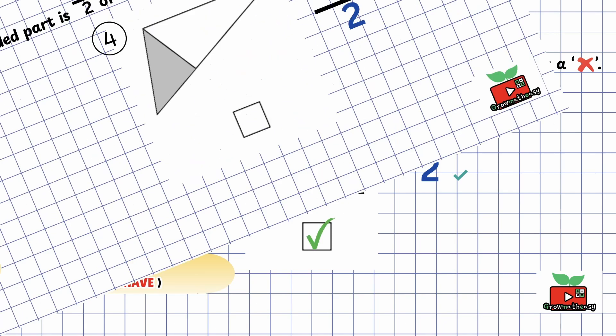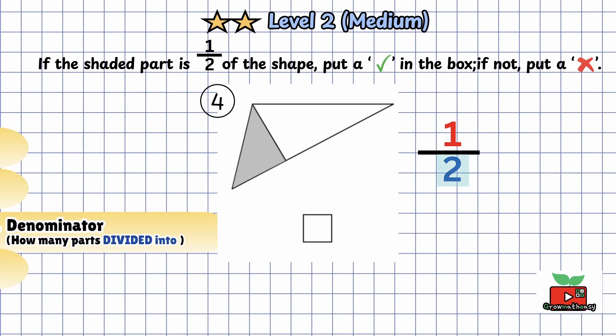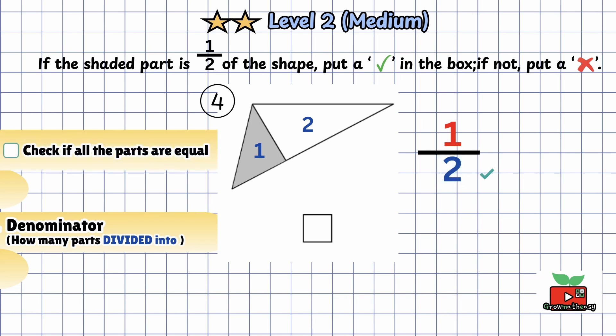Question 4: if the shaded part is half of the shape, put a tick in the box. If not, put a cross. Look at the denominator, which is 2. The shape is divided into two parts. Are all the parts equal? Hmm — one is small and one is big, so no. Therefore, the shaded part is not 1 half of the shape.